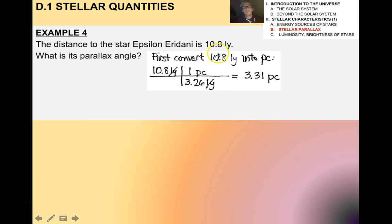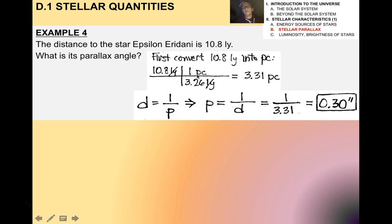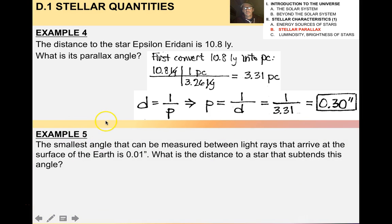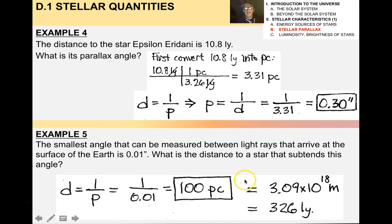For the first example, because our equation gives parsecs, we have to convert 10.8 light years into parsecs. I get that's 3.31 parsecs, and then the parallax angle is 0.3 arc seconds. For the next example — the smallest angle that can be measured over the surface of the Earth — the distance to a star at 10 times that angle works out to 326 light years.